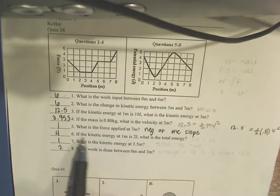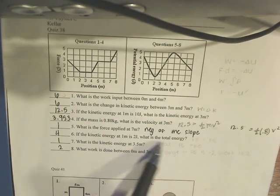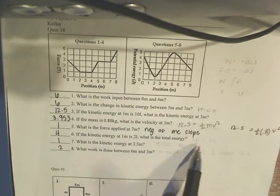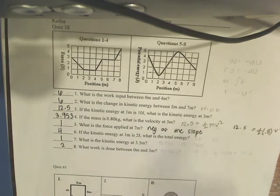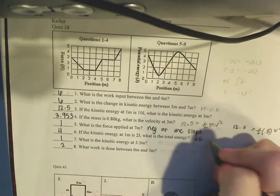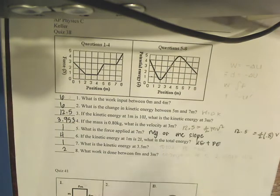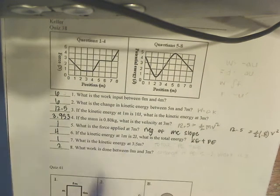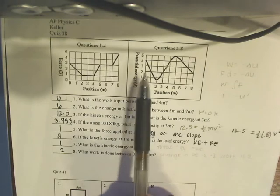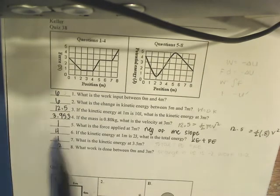Number 6, if the kinetic energy at 1 is 2, what's the total energy? Total energy equals kinetic energy plus potential energy. They tell you what kinetic energy is. You look on your graph to find potential energy. Potential energy at 1 is 2. 2 plus 2 is 4.